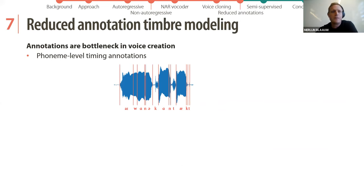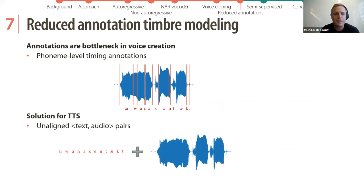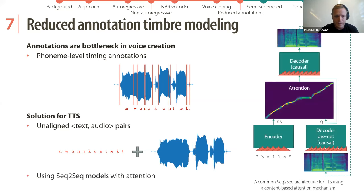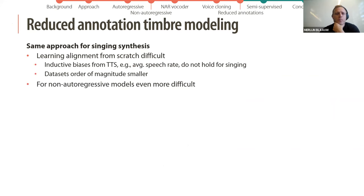The next work is about reducing the annotations required to make a timbre model. Annotations are a bottleneck in voice creation — we usually require phoneme-level timing annotations. The solution in text-to-speech is to use unaligned text and audio pairs, then use a sequence-to-sequence model with attention to learn the alignment between text and audio during training, and predict the alignment during synthesis.